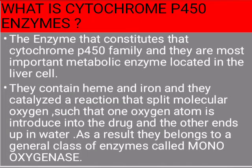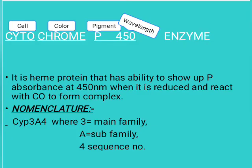Cytochrome P450 enzymes constitute the most important metabolic enzymes located in the liver cells. They contain heme and iron and catalyze a reaction that splits molecular oxygen — one oxygen atom is introduced into the drug and the other into water. As a result, they belong to the general class called monooxygenases. Here, 'cyto' means cell, 'chrome' means color, 'P' is pigment, and '450' is a wavelength.